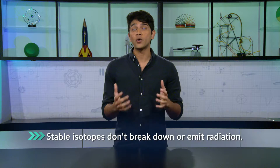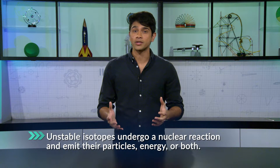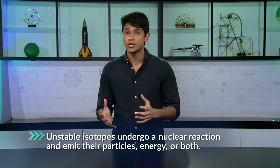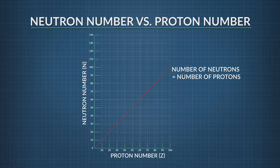Elements have both stable and unstable isotopes. Stable isotopes don't break down and emit radiation. Unstable isotopes will undergo a nuclear reaction and emit either particles, energy, or both. The stability of the element depends on the ratio between protons and neutrons and the ability of the strong nuclear force to hold them together. This chart shows the number of neutrons in relation to the number of protons, and we know which isotopes are more stable — those more distant from the center yellow line are less stable.